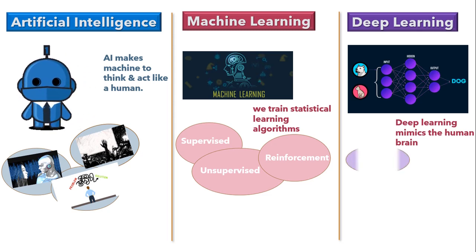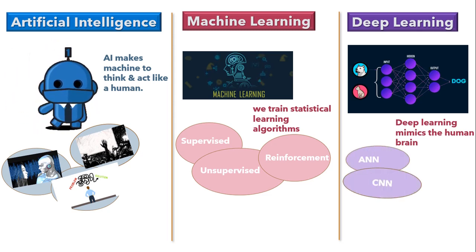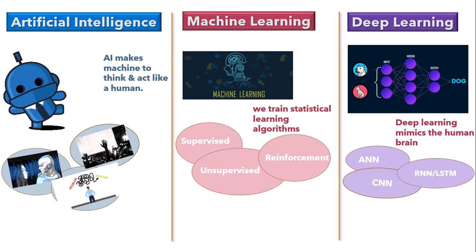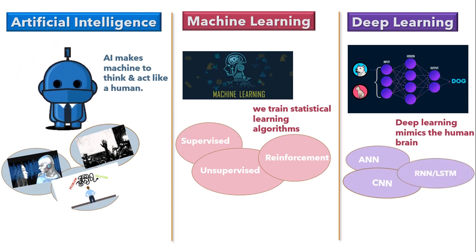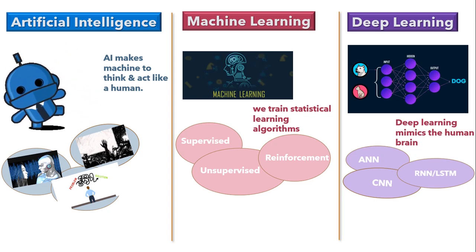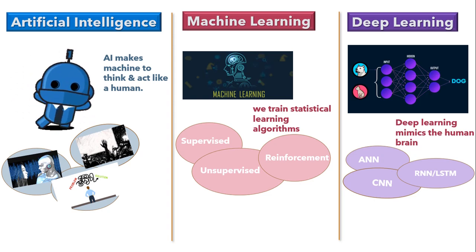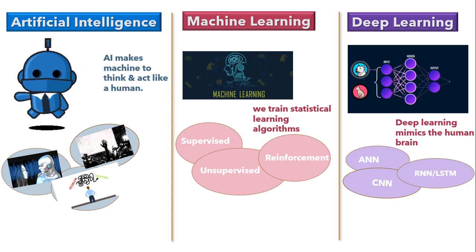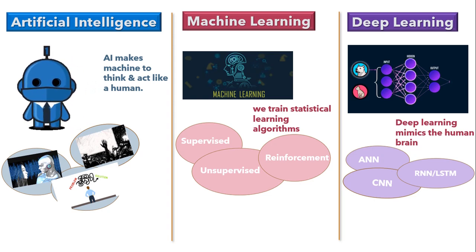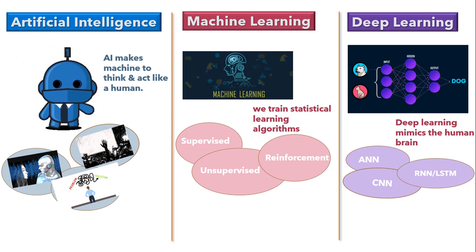Deep learning further has different techniques: artificial neural networks (ANN), convolutional neural networks (CNN), recurrent neural networks (RNN), and LSTM. If we have structured data in terms of numeric values, we use the ANN technique. If we deal with unstructured data like videos or images, we go with CNN. And if we have time-series or sequential data, we go with RNN or LSTM.